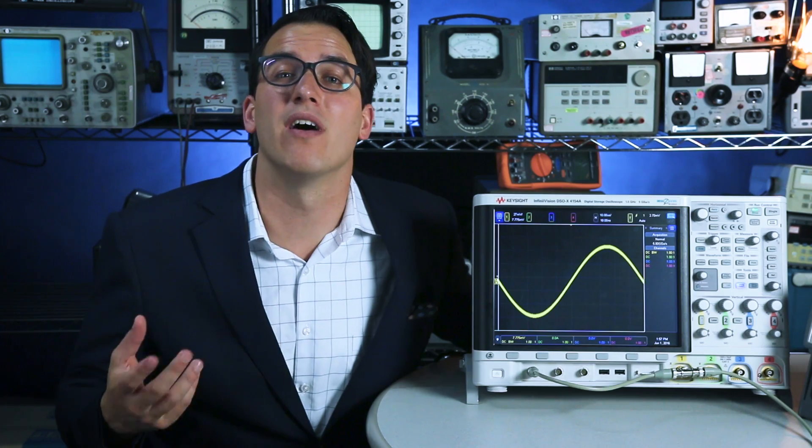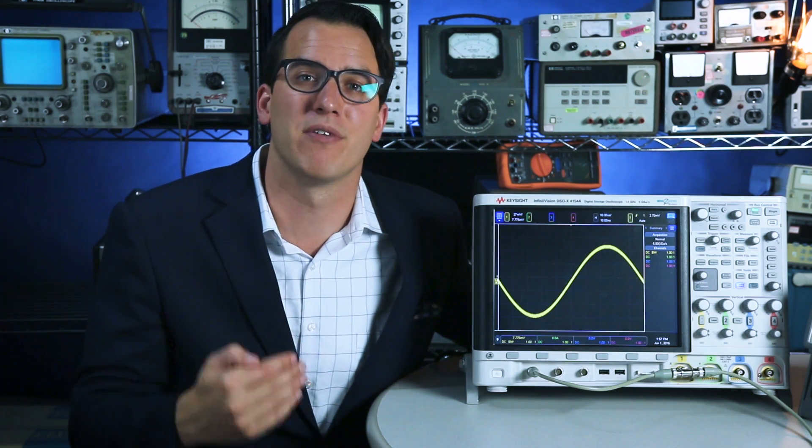The first reason you'd want to limit the bandwidth of your oscilloscope is because you don't need the full bandwidth. And remember, noise is distributed by frequency, so if I can filter out some of those higher bandwidth components of the noise, my signal's going to look cleaner on the scope.